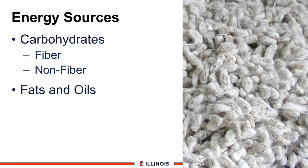Let's say a few words about energy sources initially. There are two basic sources of energy in the cow's ration: carbohydrates, which consists of fiber and non-fiber components, and fats and oils. There is a third source, which would be proteins, but generally we hope that never happens. It's a last resort because it's very expensive and energy inefficient to use proteins as an energy source.